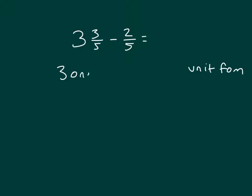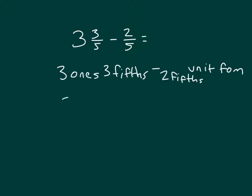This would be 3 ones and 3/5ths, minus 2/5ths. We'll work with like units. We'll stick with our 3 ones, because we can subtract 2/5ths from the 3/5ths. 3/5ths minus 2/5ths is 1/5th.